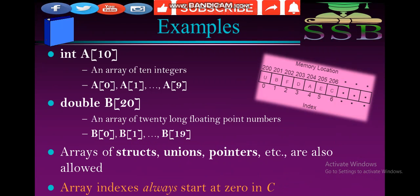For example, integer a[10] — an array of 10 integers. We can write a[0], a[1], a[2] up to a[9]. Then double b — an array of 20 long floating point numbers: b[0], b[1], b[2], b[3] up to b[19]. Arrays of structs, unions, pointers, etc. are also allowed.